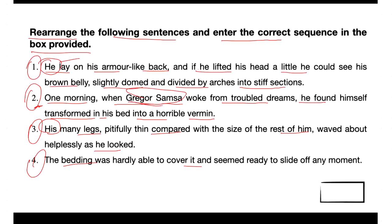So we can consider sentence two as the beginning. Sentence two serves as the introductory statement, presenting the main character — Gregor Samsa — and the central event of the story: the transformation into a horrible vermin.